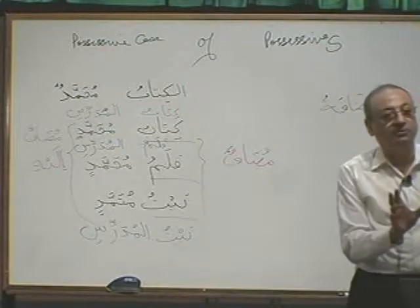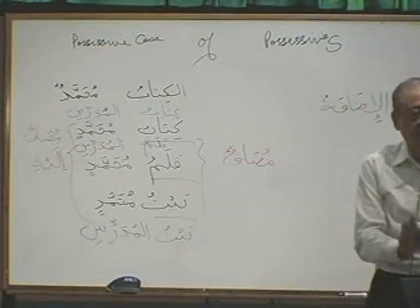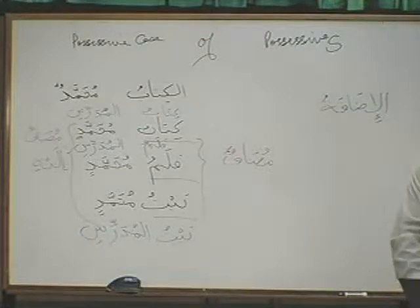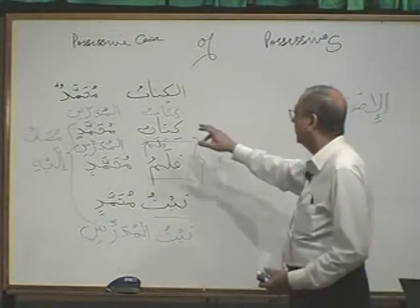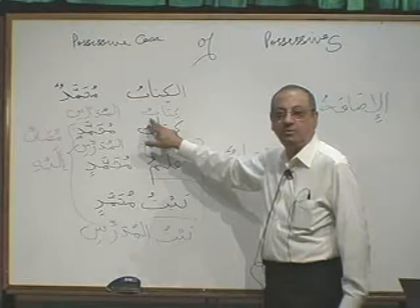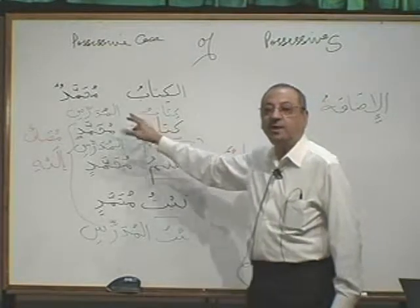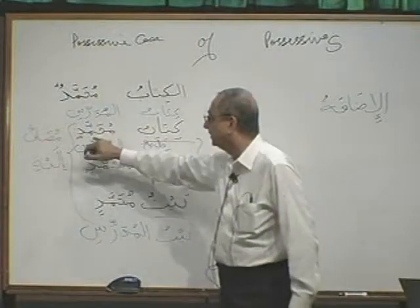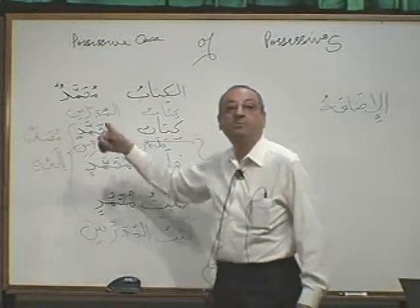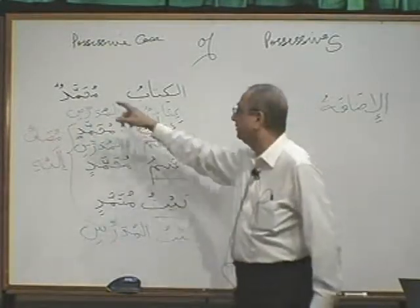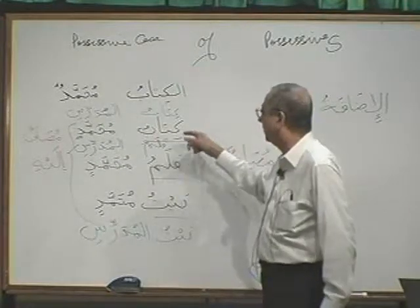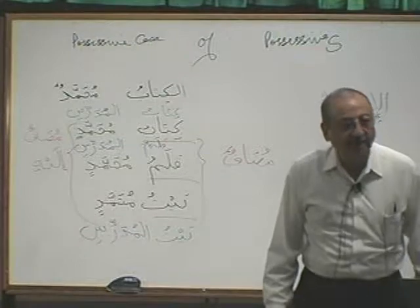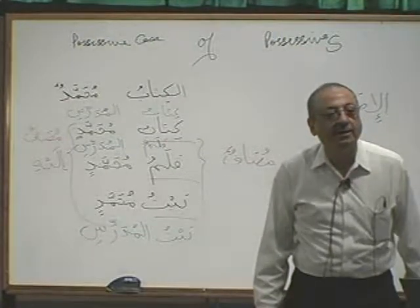We have these two nouns: book and teacher, or book and Muhammad. You will say Kitabu al-Mudarrisi. Or if it is Tanwin here, Muhammadun, it will become Kitabu Muhammadin. Kitabu Muhammadin.